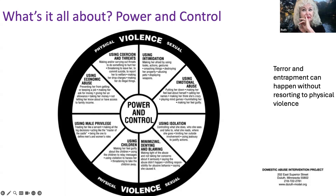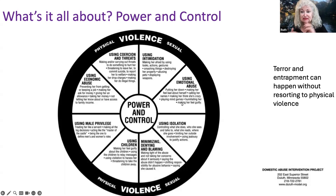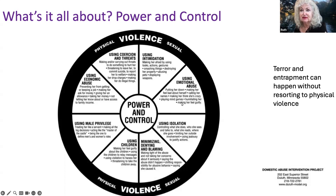If we look at the inner parts of this wheel — using emotional abuse is certainly part of coercive control: putting her down, making her feel bad about herself, calling her names, making her think she's crazy, playing mind games — we call that gaslighting. Getting inside her head to make her doubt her perception of what she saw or heard, making her doubt her memory over time, and eventually making her doubt her sanity. It's very insidious, the kind of emotional manipulation and control that happens in this kind of relationship.